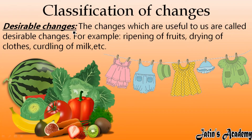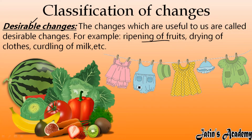Next we are having desirable changes. As the name suggests, desirable changes means the changes which are useful to us. For example, ripening of fruits — whenever we have a seed and that seed converts into a fruit or vegetable, that change is very good for us. A small seed converts into a vegetable, so that is desirable for us — that is a desirable change.